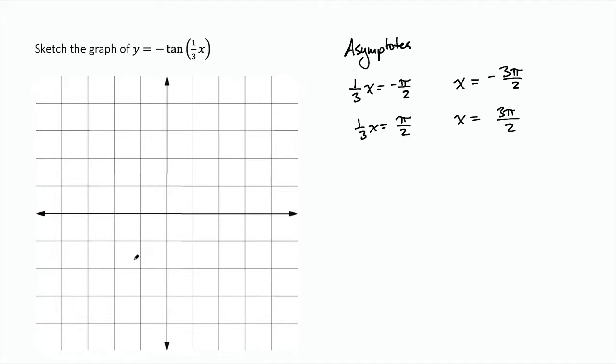So we can go ahead and sketch those. I'm just going to let each box be pi over 2. So I'll have a positive pi over 2. 3 pi over 2 is going to be 1, and negative 3 pi over 2 will be another. So that's at 3 pi over 2 and negative 3 pi over 2.